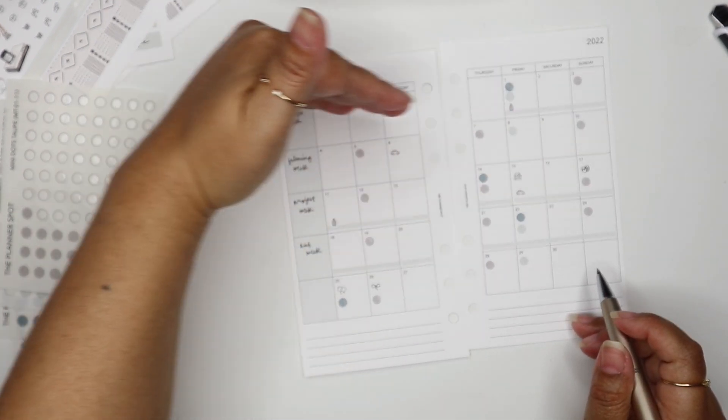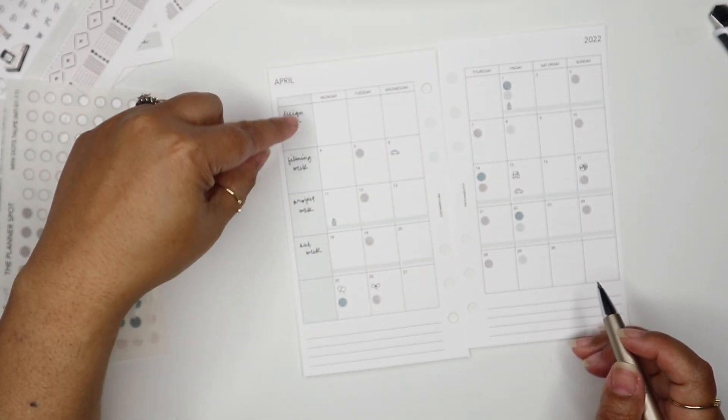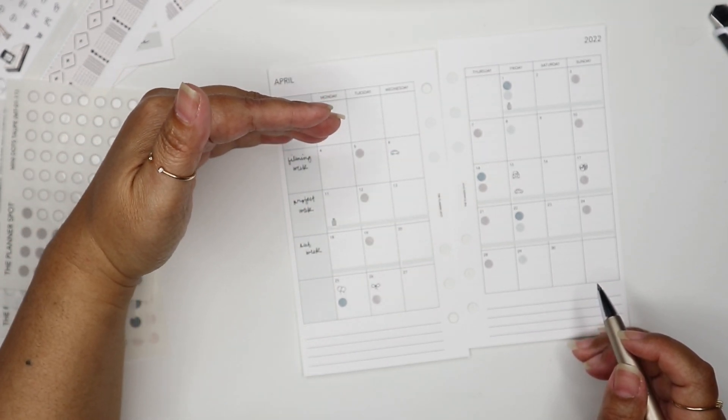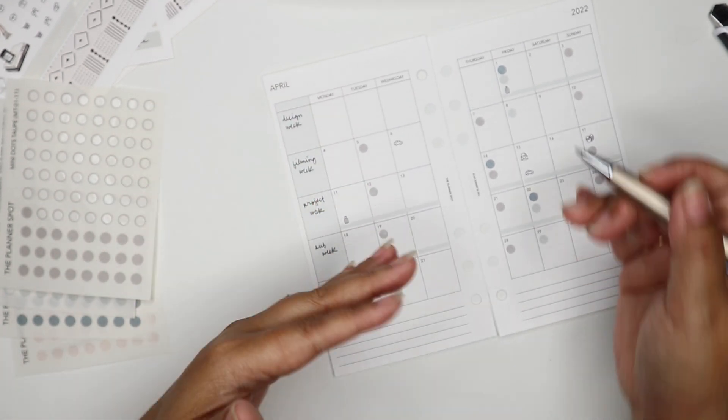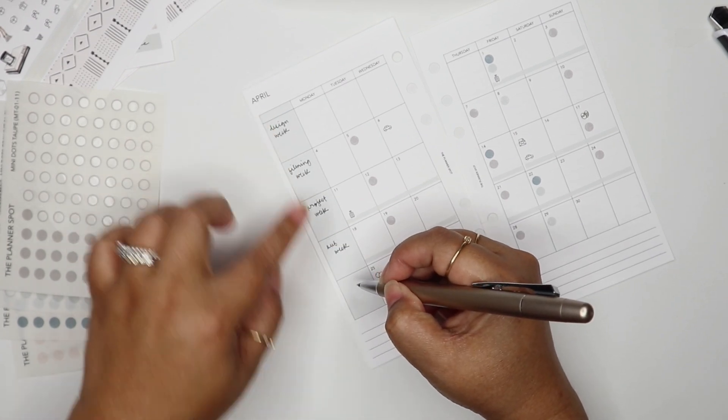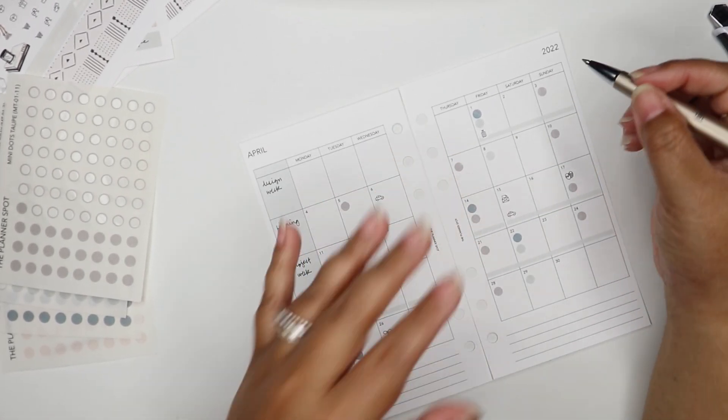Even though this isn't a full week, I'm counting this as a full week because I'll start the end of March. April has five weeks basically for me to work with, so that's why I have design week in two spots. I'm going to go ahead and write in all the things here.